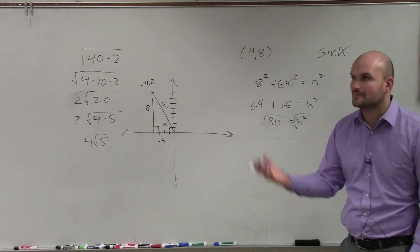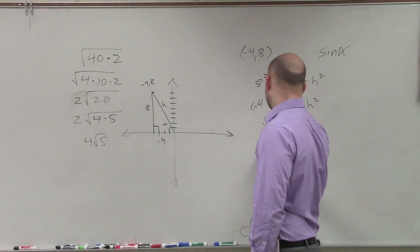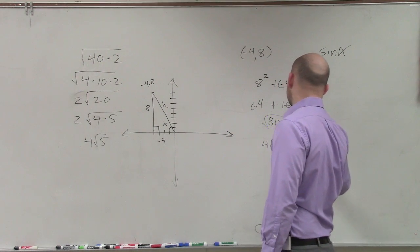2 times 4 times square root of 5. So yeah, 16. Could have done 16 times 5, which would have been the same thing. So anyways, we have 4 times square root of 5 equals h.